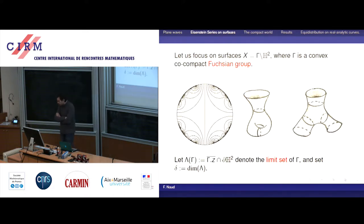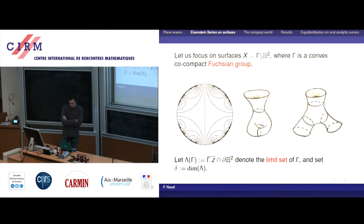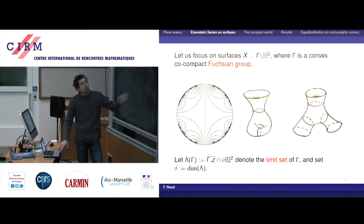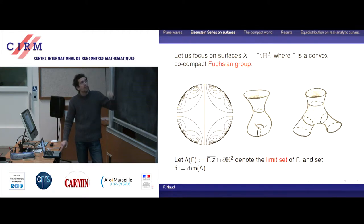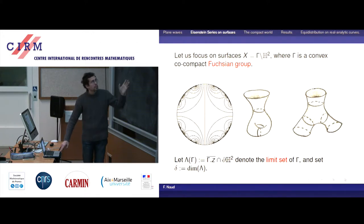In the simplest setting — surfaces — we look at hyperbolic surfaces, convex cocompact. These are the simplest examples in this conformally compact setup. We uniformize these surfaces by Schottky groups. As in most previous talks, there will always be this delta notation, which denotes the Hausdorff dimension of the limit set. This quantity will play a role in this talk as well, although we are not talking about resonances at all.